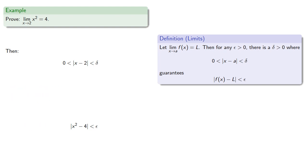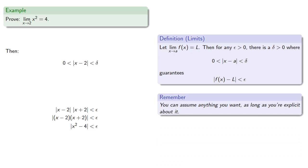So we can work a few steps back from the end. And we see that we have to do something with this absolute value of x plus 2. Remember, you can assume anything you want as long as you're explicit about it. So let's see what we can do with this absolute value of x plus 2.